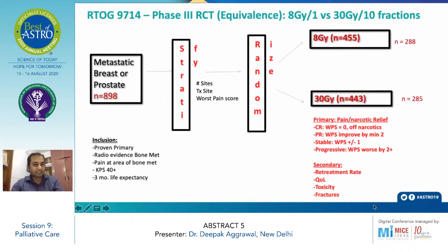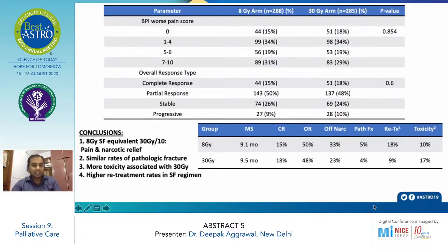A previous study, RTOG 9714, included patients with breast and prostate cancer. Almost 900 patients were randomized to 8 Gy single fraction or 30 Gy in 10 fractions to assess pain and narcotic relief, with variables of complete, partial, and stable response. The secondary outcomes were re-treatment rate, quality of life, toxicity, and fracture. The clinical outcome — Brief Pain Inventory score — was not significantly different between the two arms. Overall response and survival outcomes were also similar, with median survival of 9.1 months in the 8 Gy arm and 9.5 months in the 30 Gy/10 fraction arm.